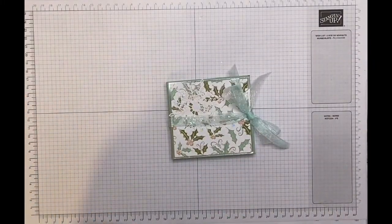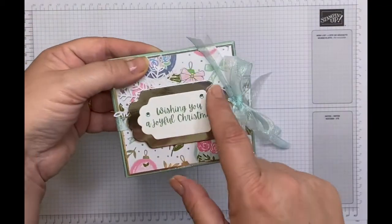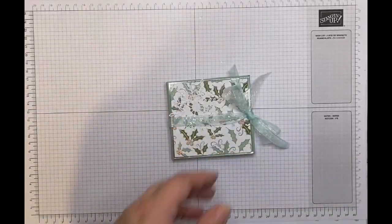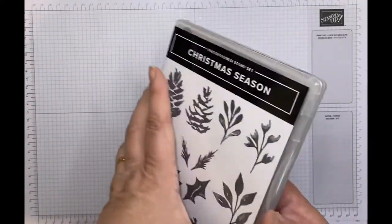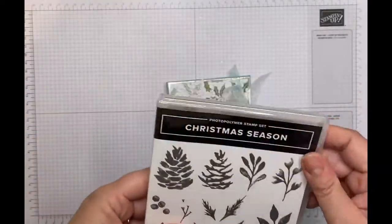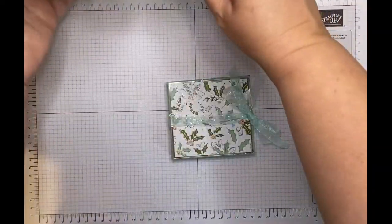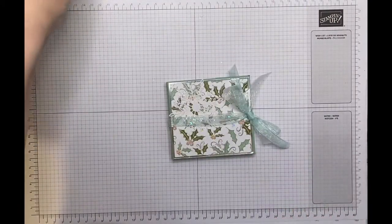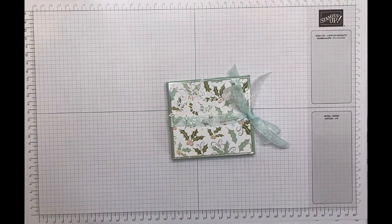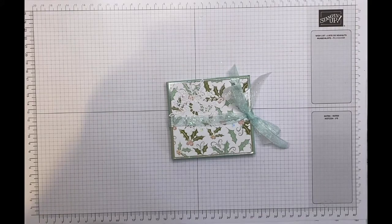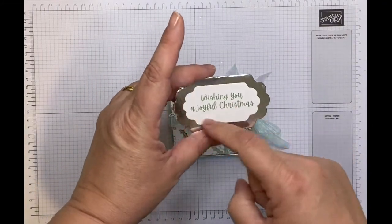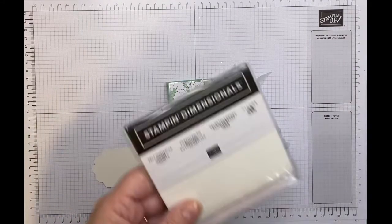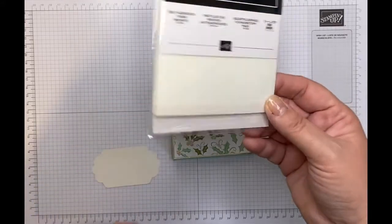And then next I'm going to make my cute little center sentiment piece just here. And I'm using dies from the Christmas season, which are these ones just here. And the sentiment I'm going to use is a sentiment from wishing you a joyful Christmas, and that's from Words of Cheer. And I'm going to be stamping it in mint macaroon and I am going to be using the silver foil as my outer layer as well. So I've done both of those in advance and I'm going to pop these on using my self-adhesive foam mounts, my stamping dimensionals.